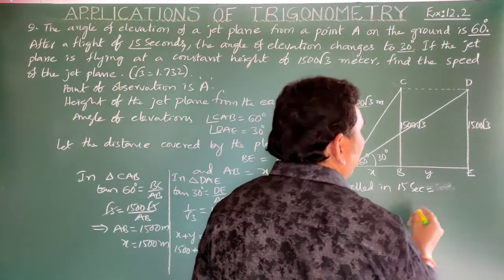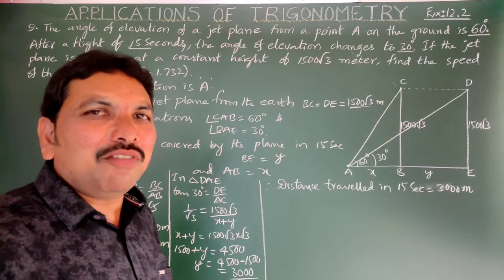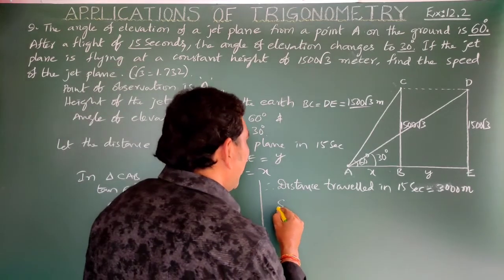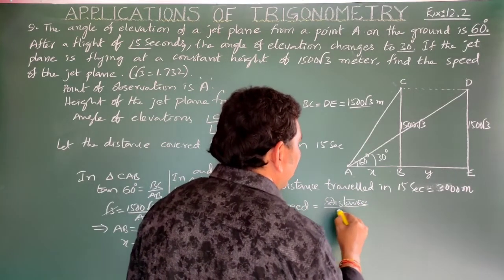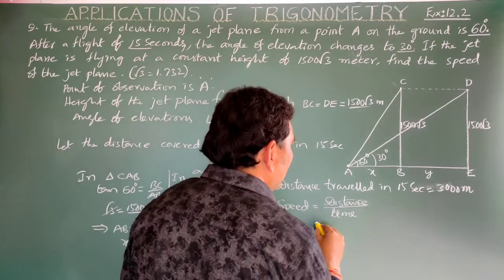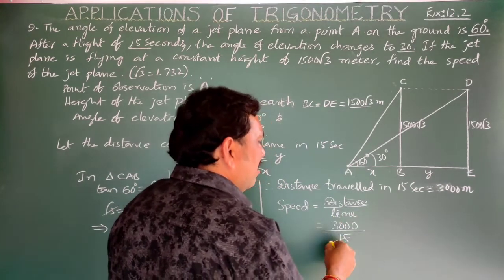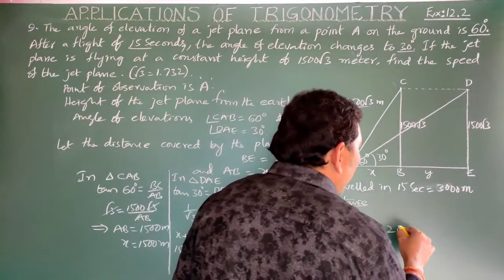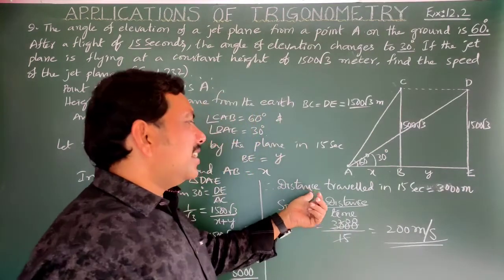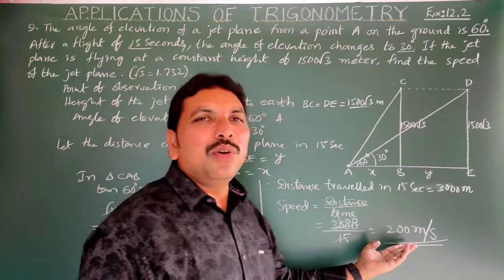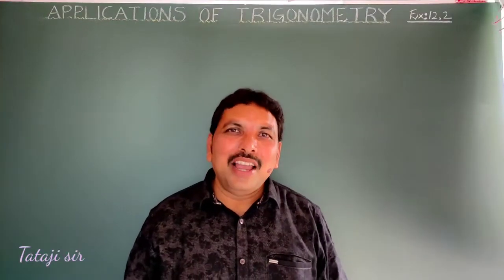Therefore, the distance traveled in 15 seconds is 3000 meters. Speed = distance / time = 3000 meters / 15 seconds = 200 meters per second. So the speed of the jet plane is 200 meters per second.